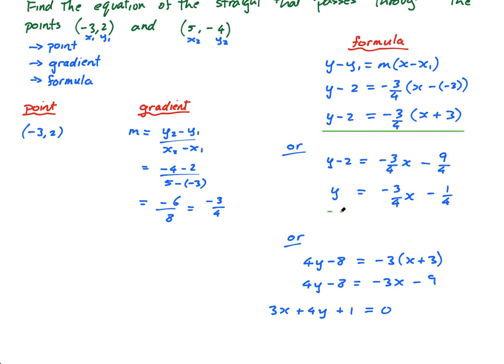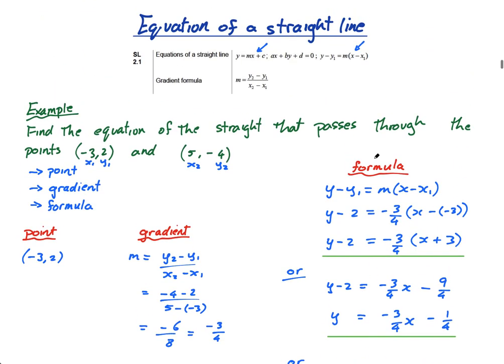So those are my three different forms. One, two, three. Okay, that's it. Equation of the line. Make sure you have a point, the gradient, and then a formula. And this is my formula of choice. See you in the next lesson.